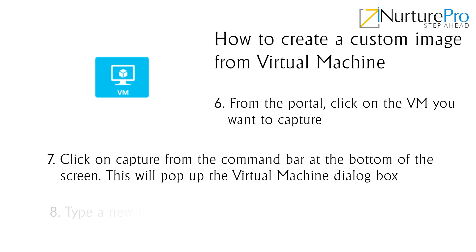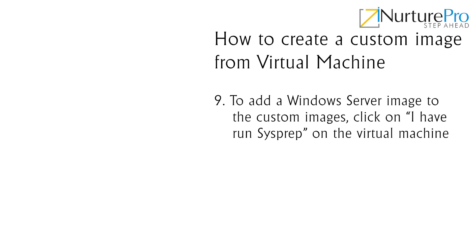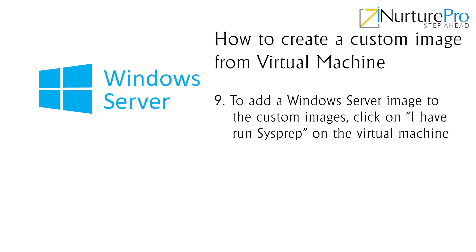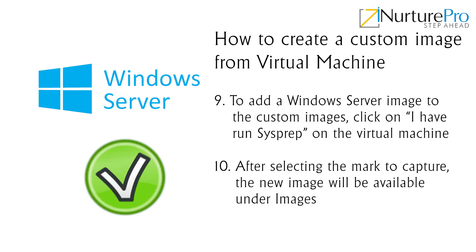Type a new name in the image name. To add a Windows Server image to the custom images, click on I have run sysprep on the virtual machine. After selecting the mark to capture, the new image will be available under the images.